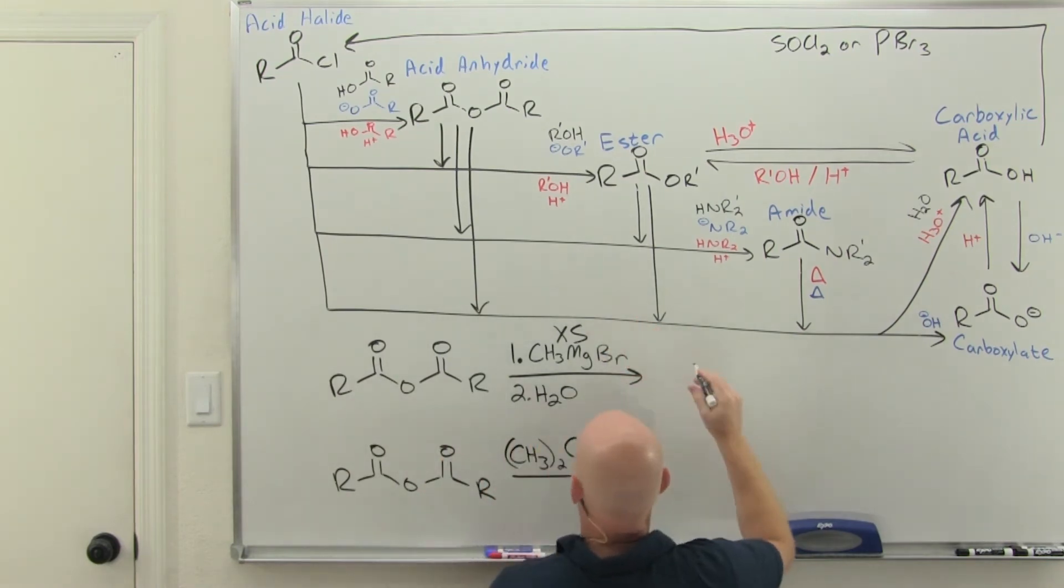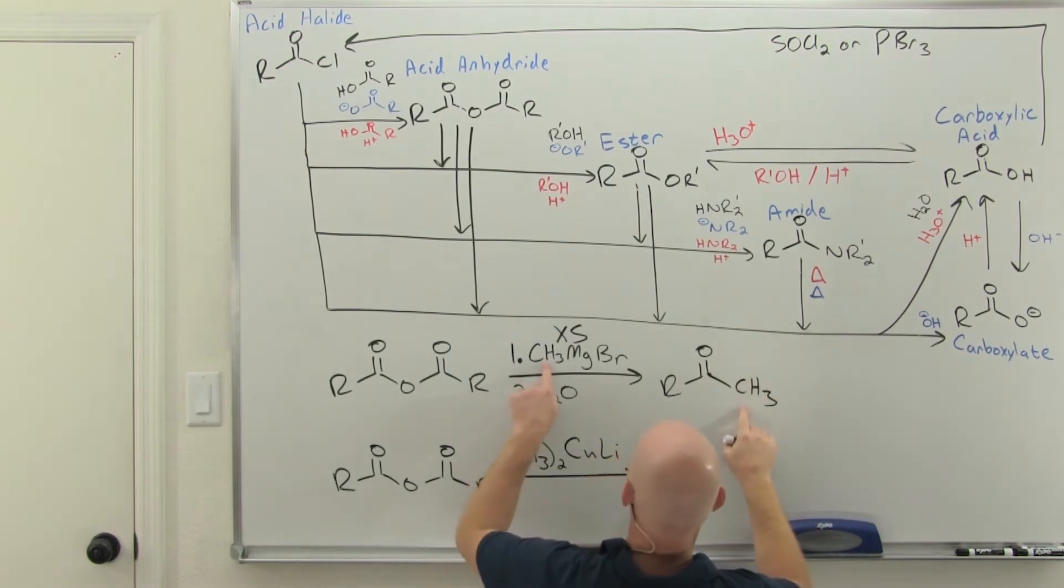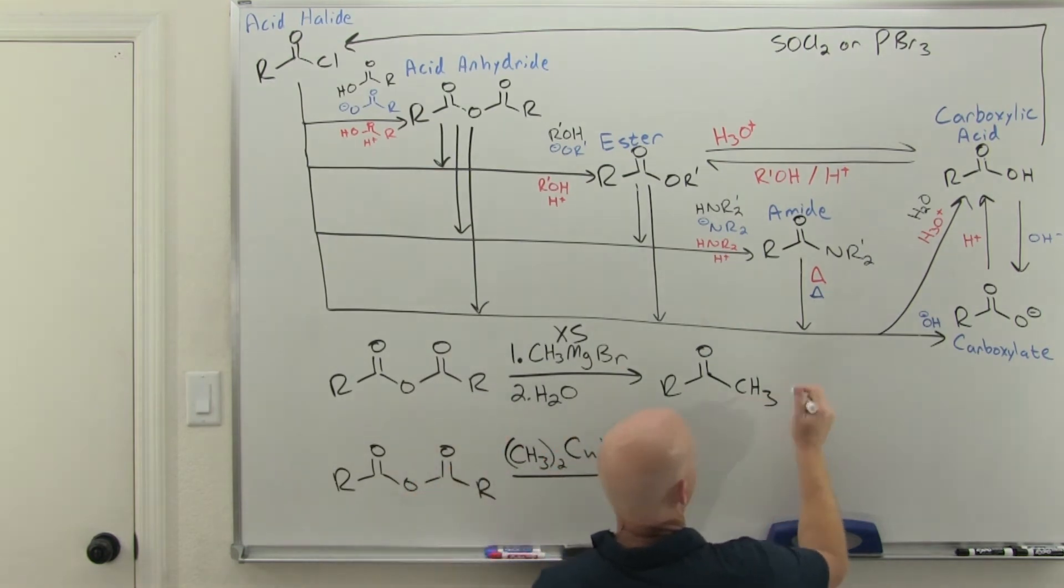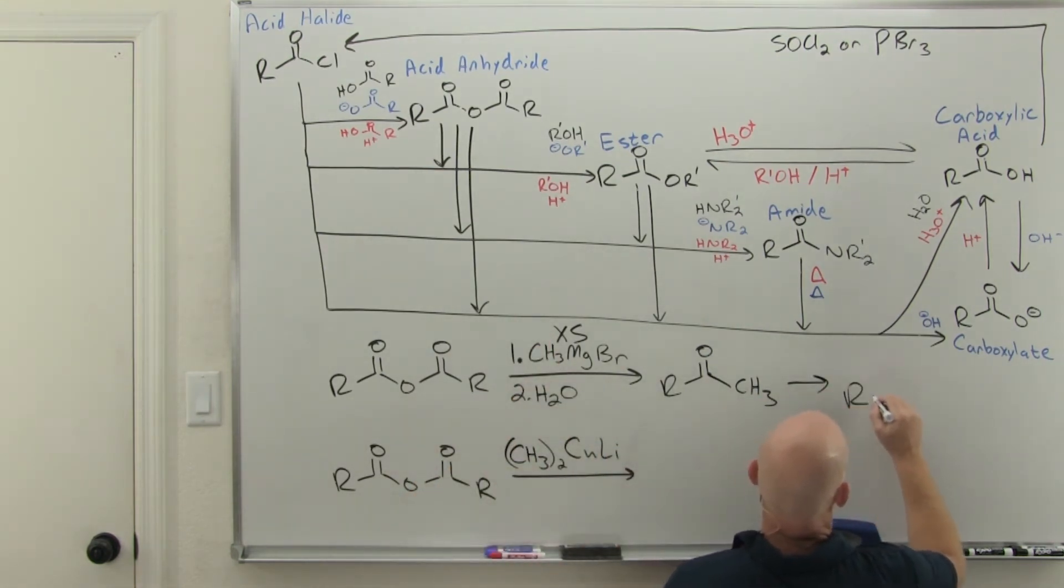The first equivalent is going to substitute. In this case, the methyl Grignard, a methyl group for your carboxyl leaving group. But again, Grignards react with ketones, so it'll keep reacting in the presence of excess to add a second equivalent and give you a corresponding tertiary alcohol.